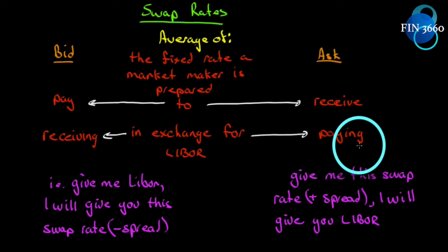In the last numerical example we gave for AAA and BBB, I went into a narrative on what the swap rate is. So let's lay it out specifically so that we understand. The swap rate is the average of the fixed rate a market maker is prepared to pay or to receive in exchange for receiving or for paying LIBOR.